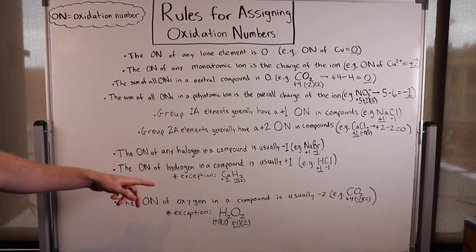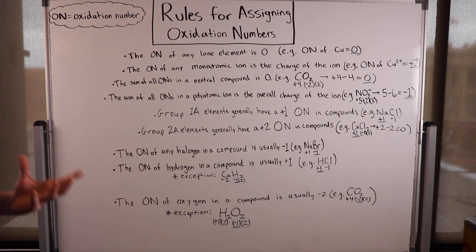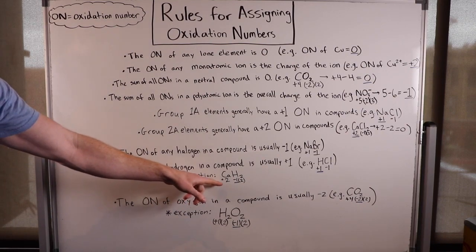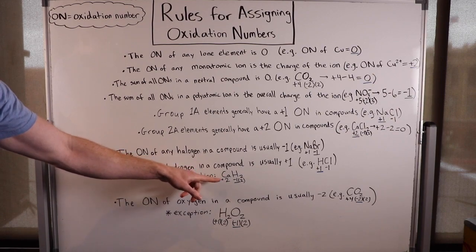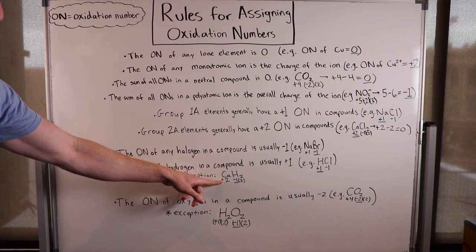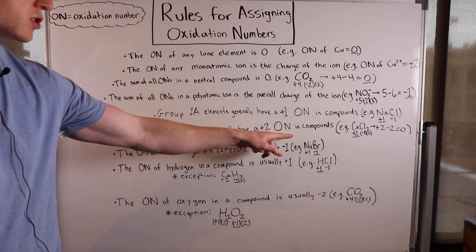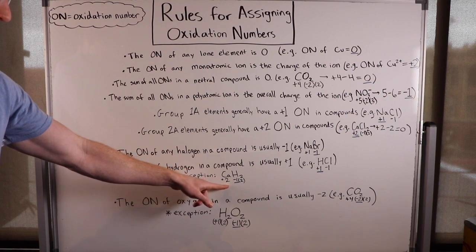There are a few exceptions to this rule. One exception is generally when hydrogen is bonded to a metal like calcium. Calcium is from group 2A, and group 2A elements generally have a plus two oxidation number in compounds, so we'll have to follow that rule.